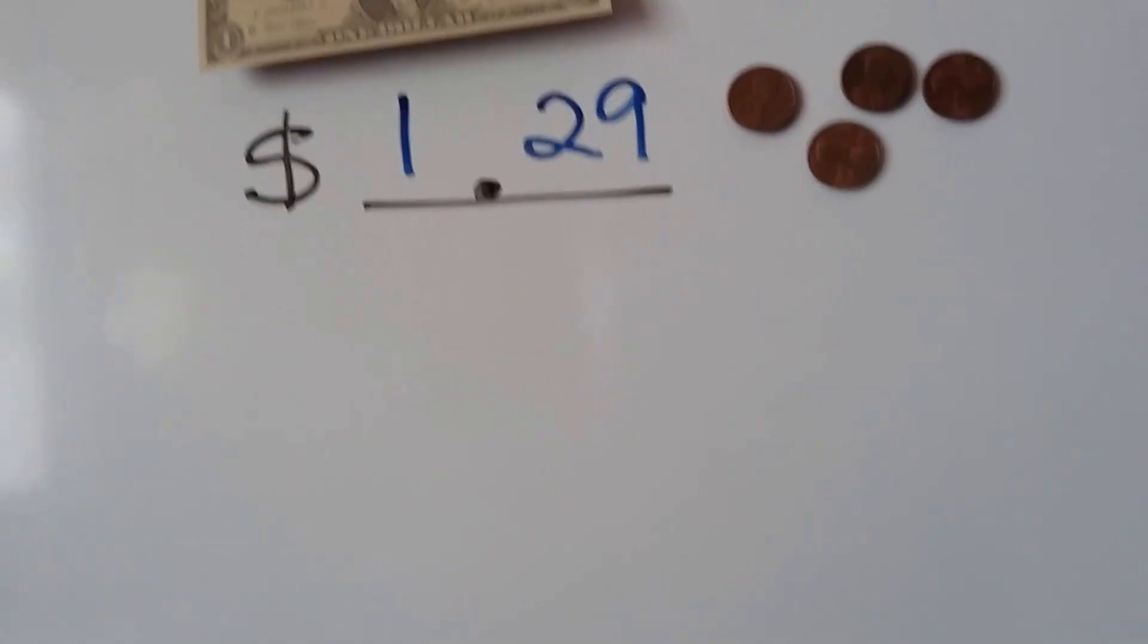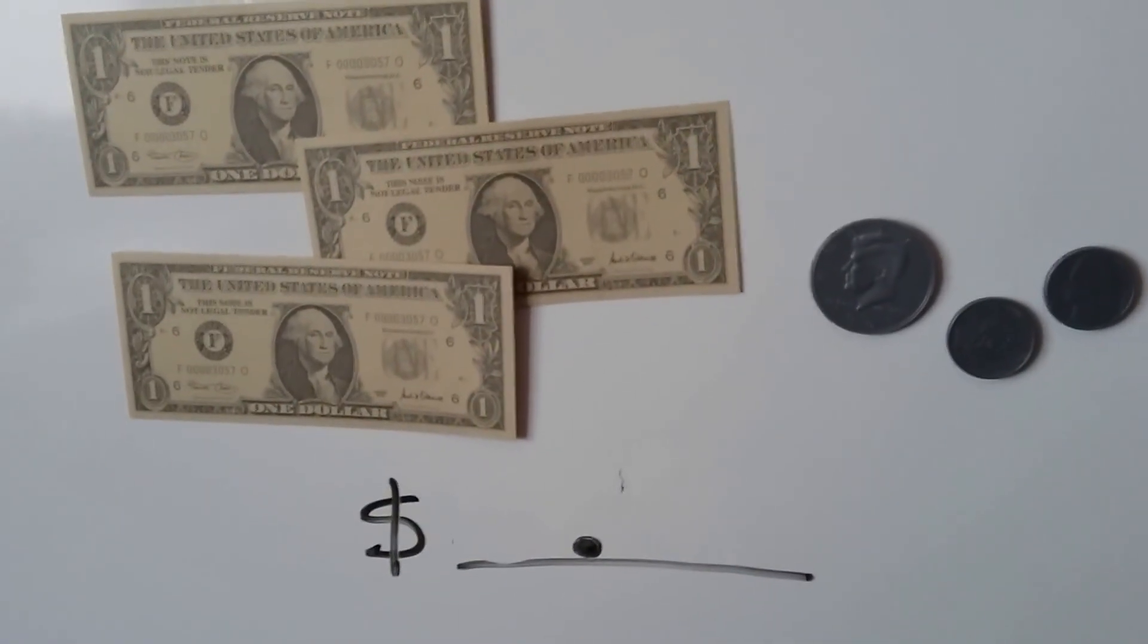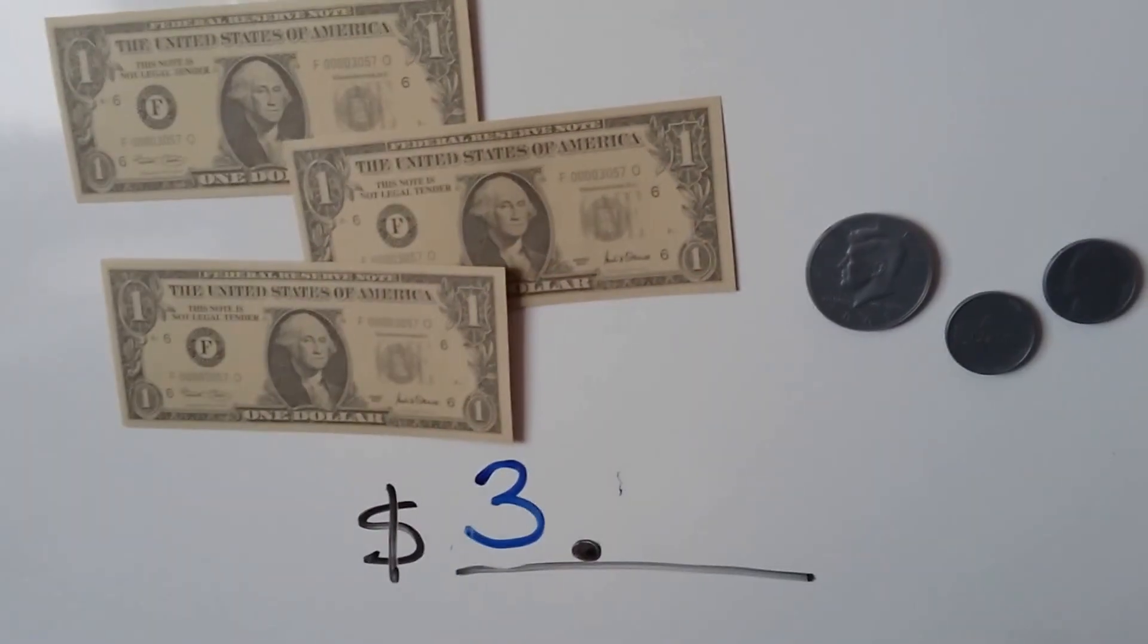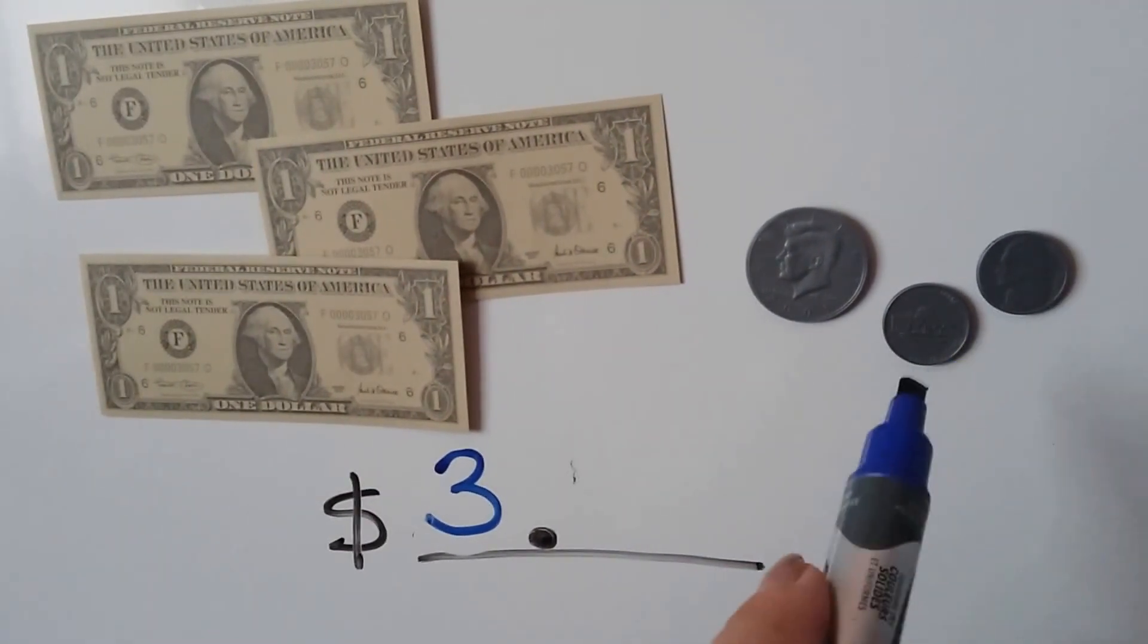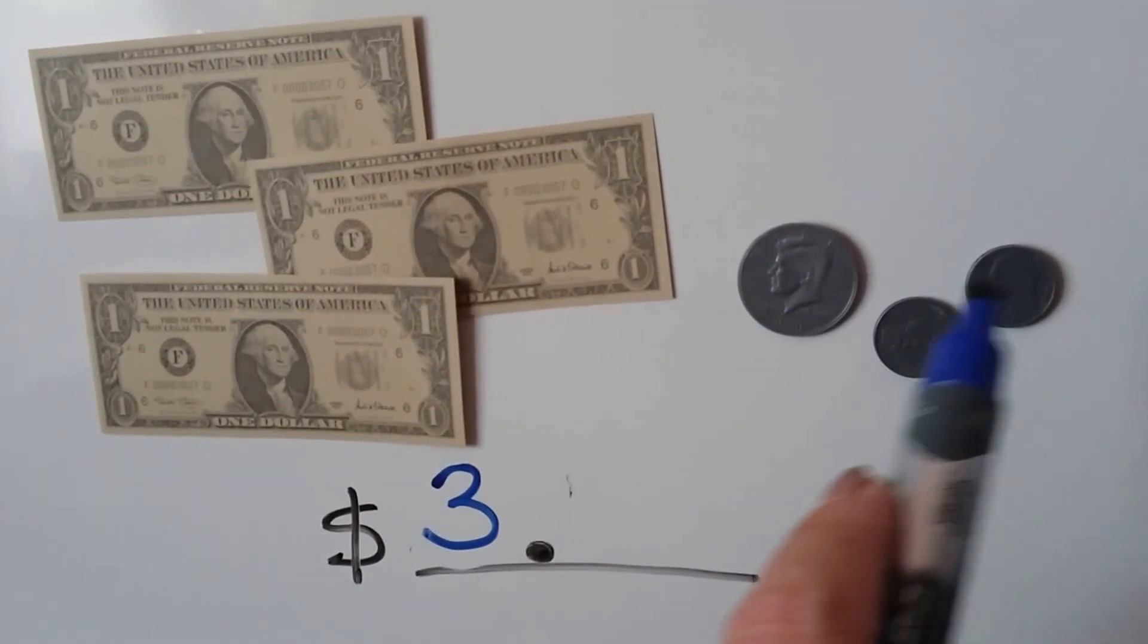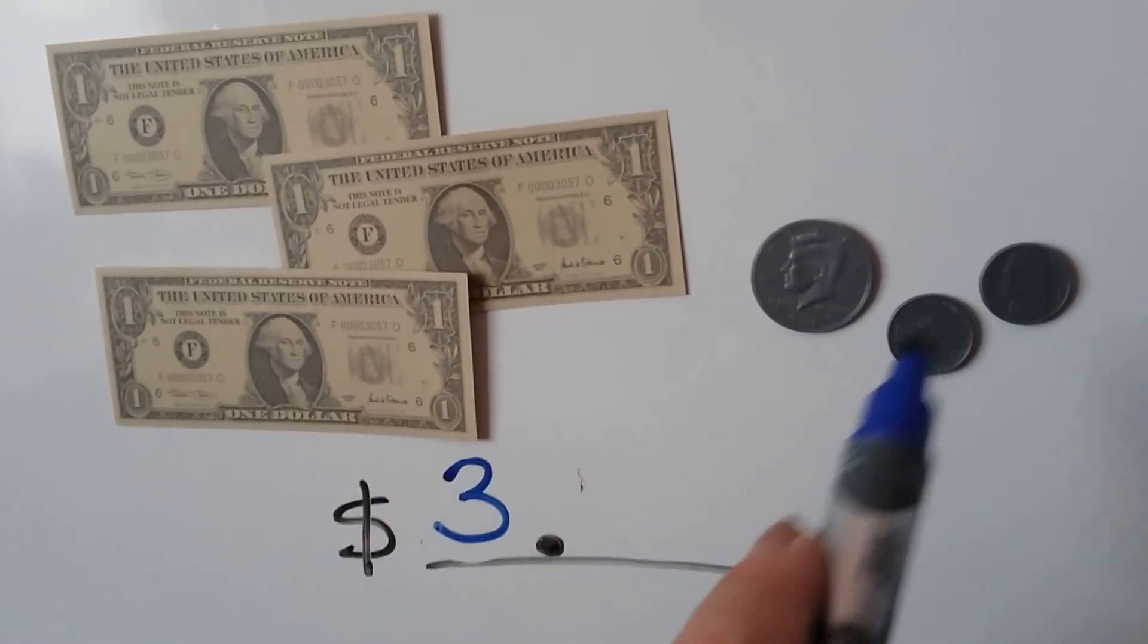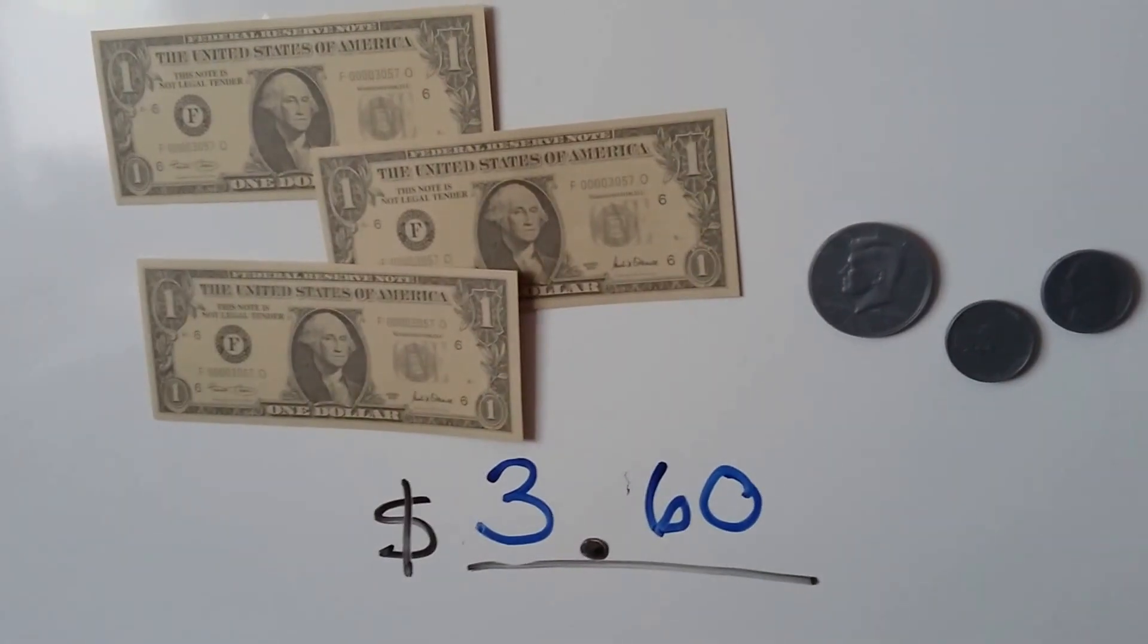Let's try another one. We start with the dollars. How many dollars do we see? 1, 2, 3. 3 dollars. We have a half dollar and we have 2 nickels. The half dollar is 50 cents. And each nickel is 5 cents. 5 and 5 is 10. So that's 50, 60. We have 3 dollars and 60 cents.